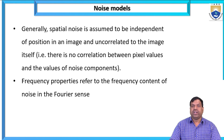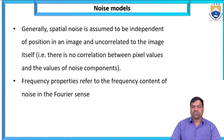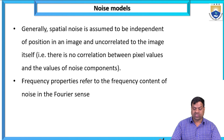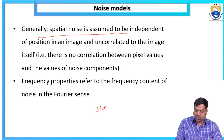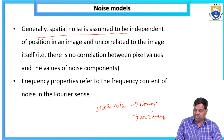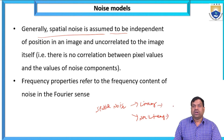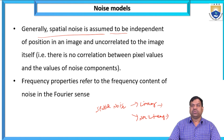Generally, spatial noise is assumed to be independent of position in an image and uncorrelated to the image itself — there is no correlation between pixel values and the values of noise components. Frequency properties refers to the frequency content of noise in the Fourier sense. Spatial noises can be linear or nonlinear depending on the filter type.